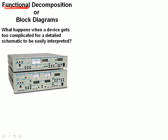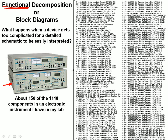The question we want to ask is: what happens when a device gets too complicated for a detailed schematic or a diagram of all the parts to be easily interpreted? This device here is from Stanford Research Systems — it's an electronic device called a lock-in amplifier. It's an analog device and fairly old; I have it in my laboratory. I downloaded the product manual, and what you see here is about 150 of the 1,148 components in this electronic instrument. With over 1,000 components, you can't look at a diagram and understand how it works because the human mind just can't keep that much information in its head. So how do we get a holistic understanding of how this device works?